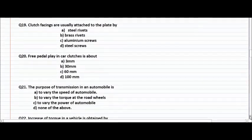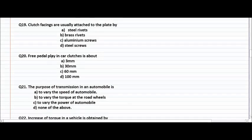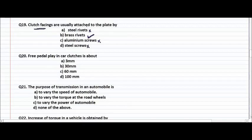Clutch facings are attached to the plate by — steel rivets, brass rivets, aluminum screws, or steel screws? Most people target steel screws or steel rivets, but those are not the right answer. Aluminum screws is also not the answer. Brass rivets is the right answer — clutch facings are attached to the plate by means of brass rivets.